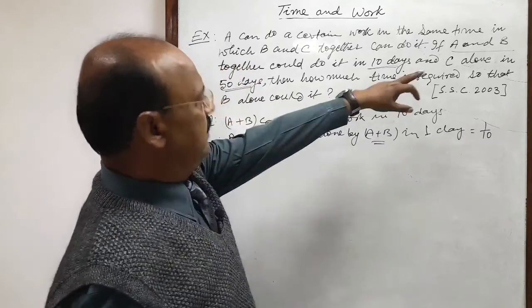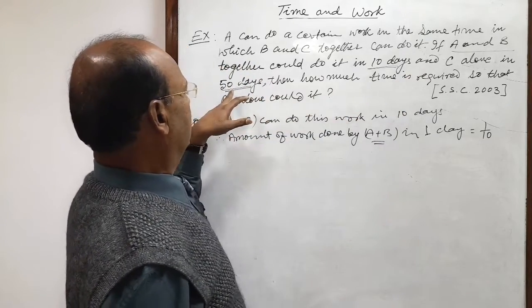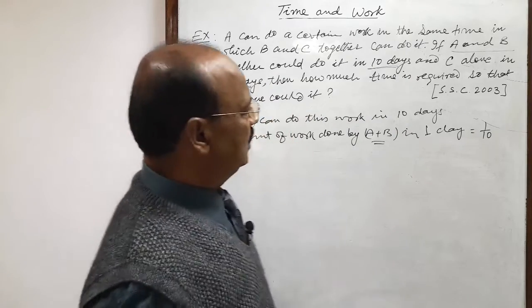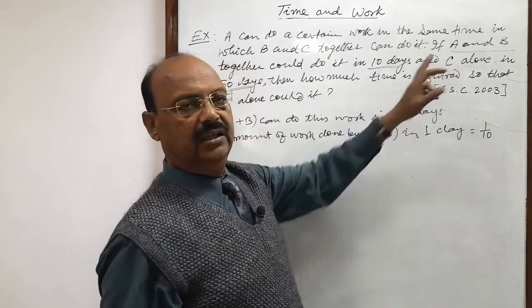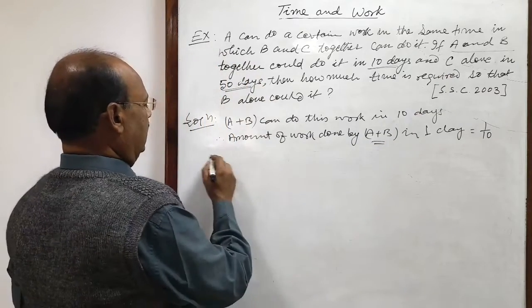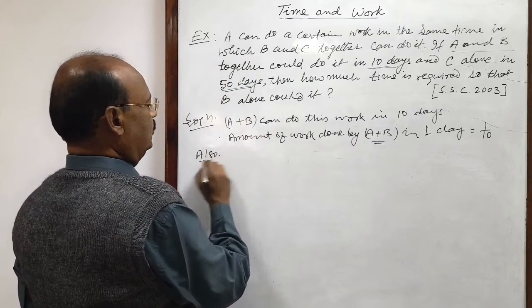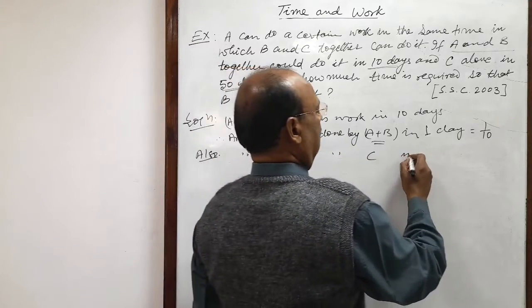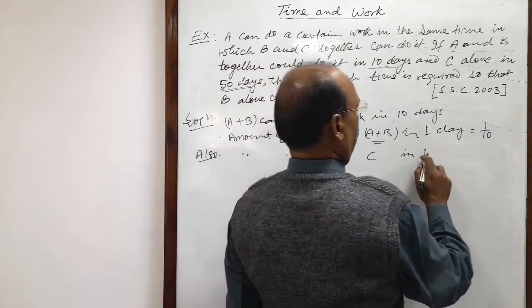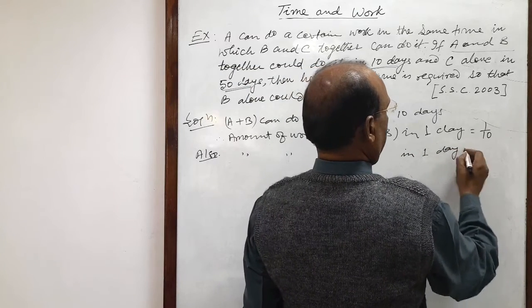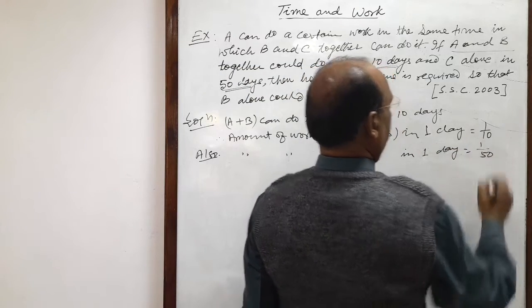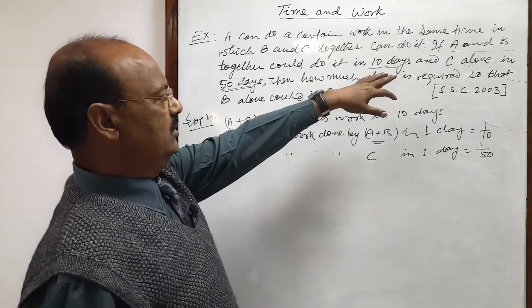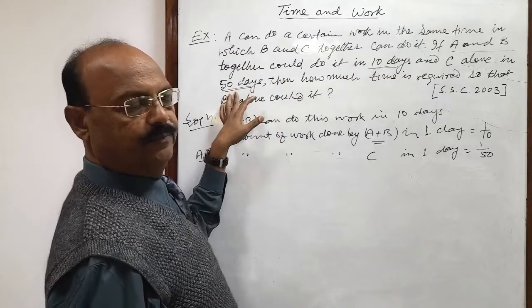And C alone can do this work in 50 days. So how much work can be done by C in 1 day? On the same pattern, we can write also amount of work done by C in 1 day is 1 by 50. Why? Because C can do this job in 50 days.